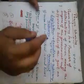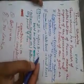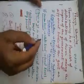Power sharing can be horizontal or vertical. In vertical power sharing, power is distributed between the Union central government and the state governments.